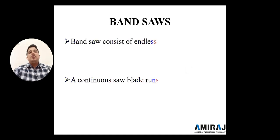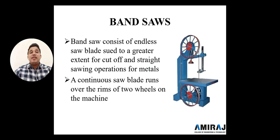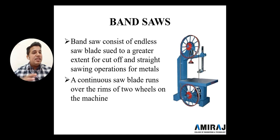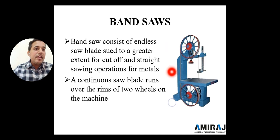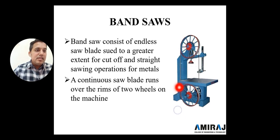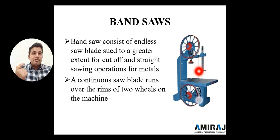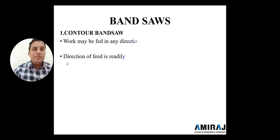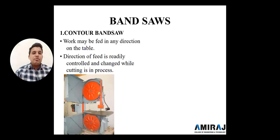The band saw consists of an endless saw blade used for straight sawing operations on metals. Originally used for wooden purposes, it is now also used for metal cutting. The continuous saw blade runs on two wheels on the machine. It is a very dangerous machine because the speed is high and safety measures must be taken. Band saws have two types.